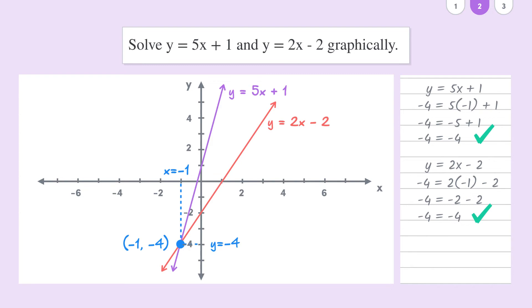So this solution makes sense because this point lies on both of our lines and is the only point that does so. In other words, the common solution to our simultaneous equations that we've been looking for is x equals minus 1 and y equals minus 4.